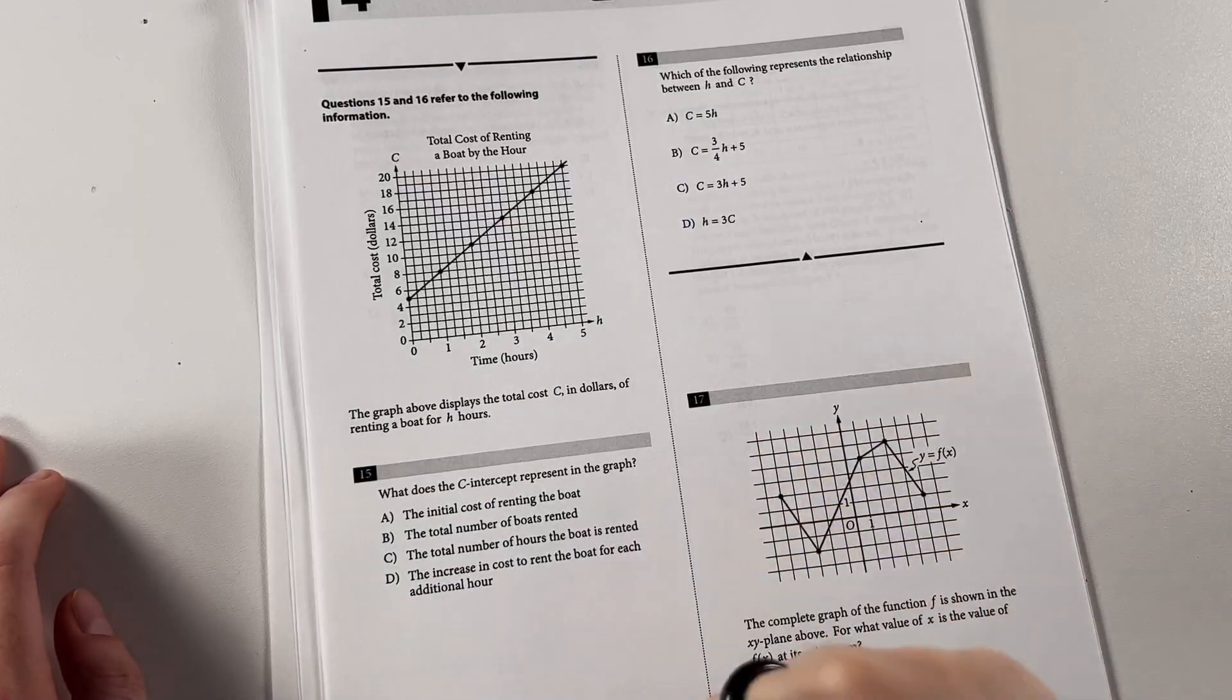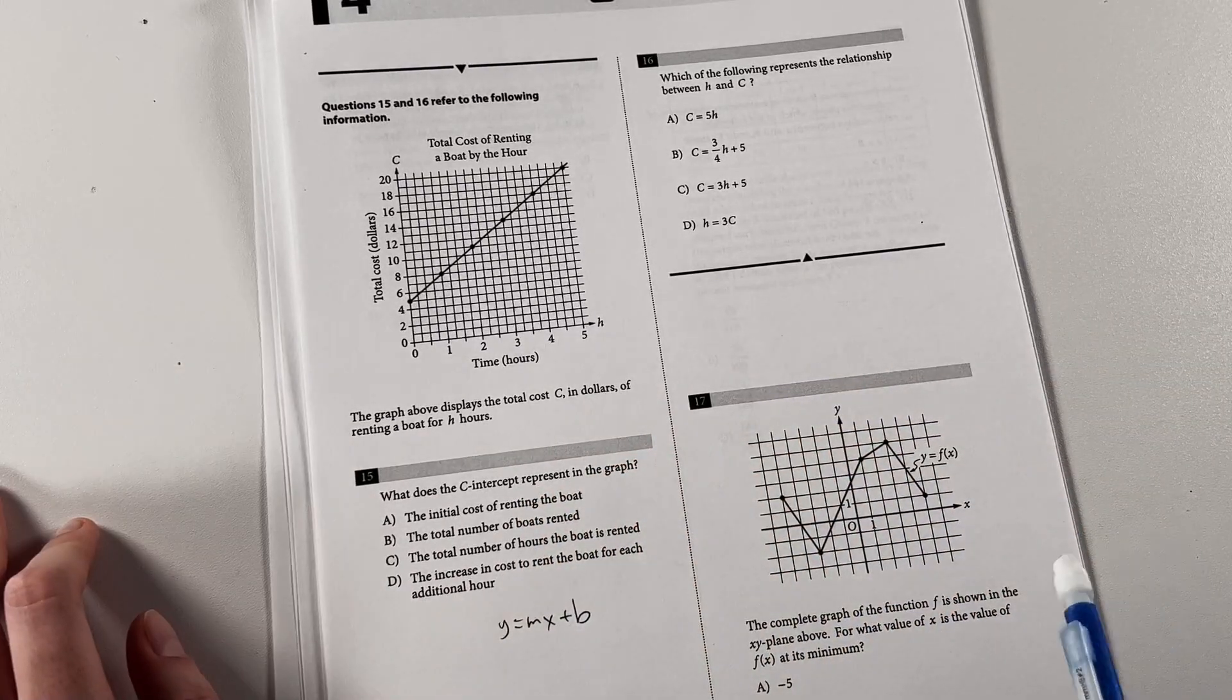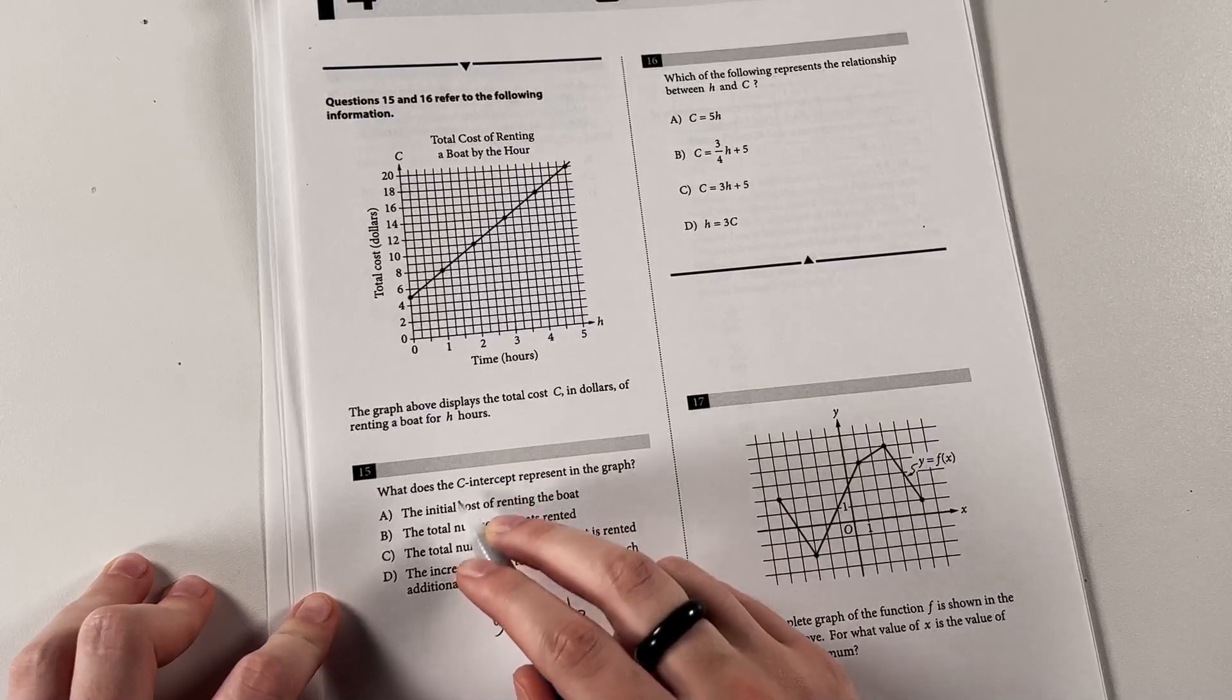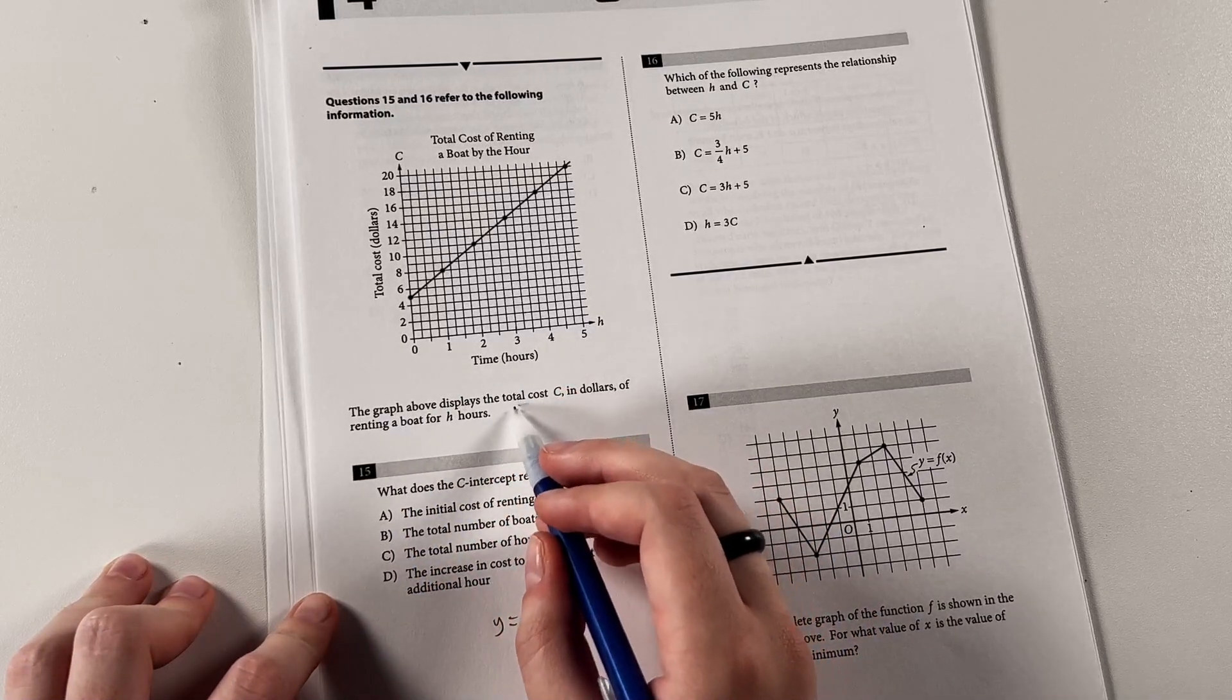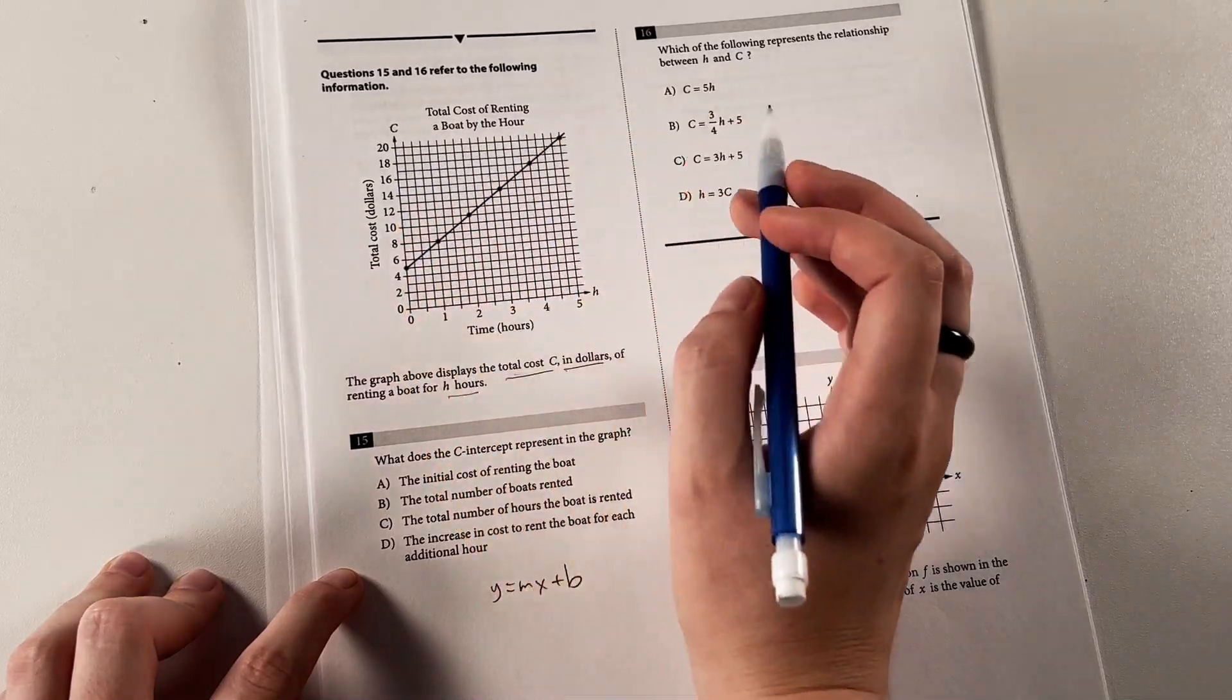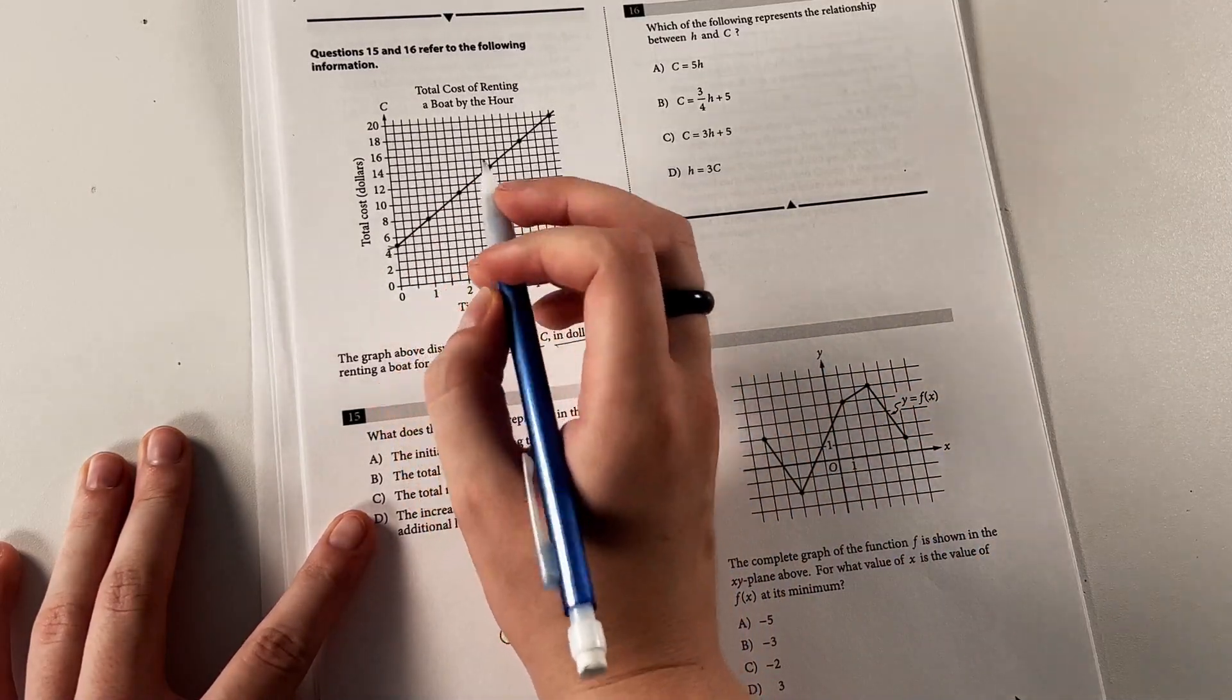Anyway, we have another two-part question. Now, if you watched the no calculator section, you know how much y equals mx plus b shows up, and this section is no exception. We have this linear graph. We don't even need to make it into an equation yet until this question, but we're just looking for what the c-intercept represents in the graph, if this is the total cost, c, in dollars, of renting a boat for h hours. So in this case, let's just do both of them at once. This is usually our y-axis, and this is our x, so it's going to look like this. And the c-intercept is going to be this value here, so it's 5 in this case.